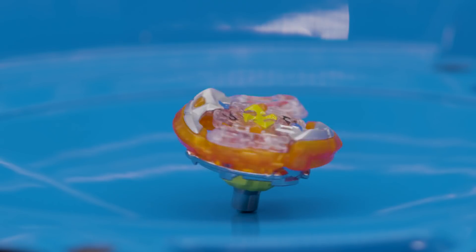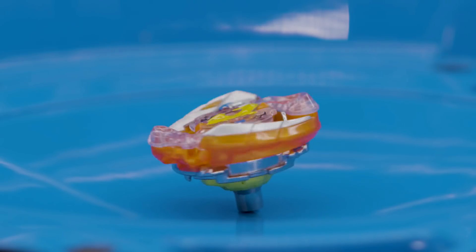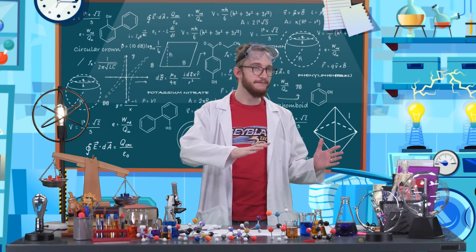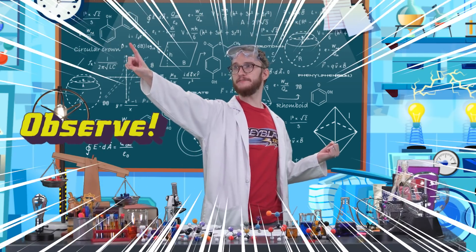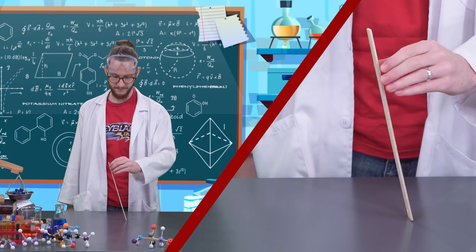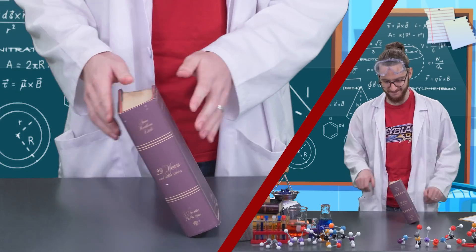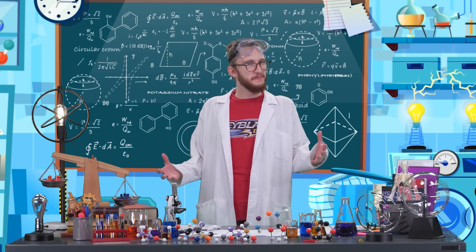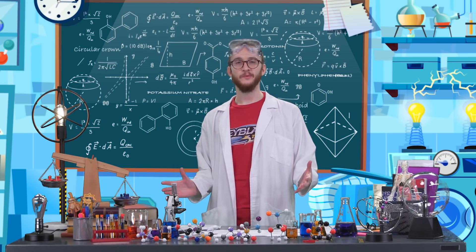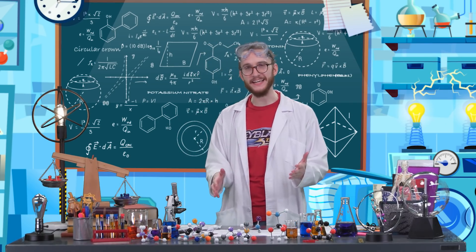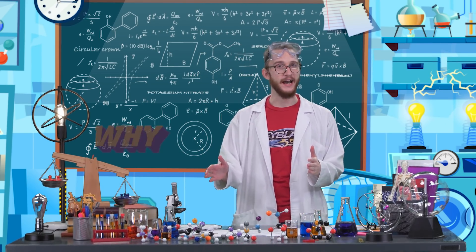Here's a super close and super slow-mo look at precession. When most objects tip to the side, they fall over. Observe! So why isn't my Beyblade toppling over? Well, I mean, if I let it go like this, it will. But when it's spinning, it doesn't.